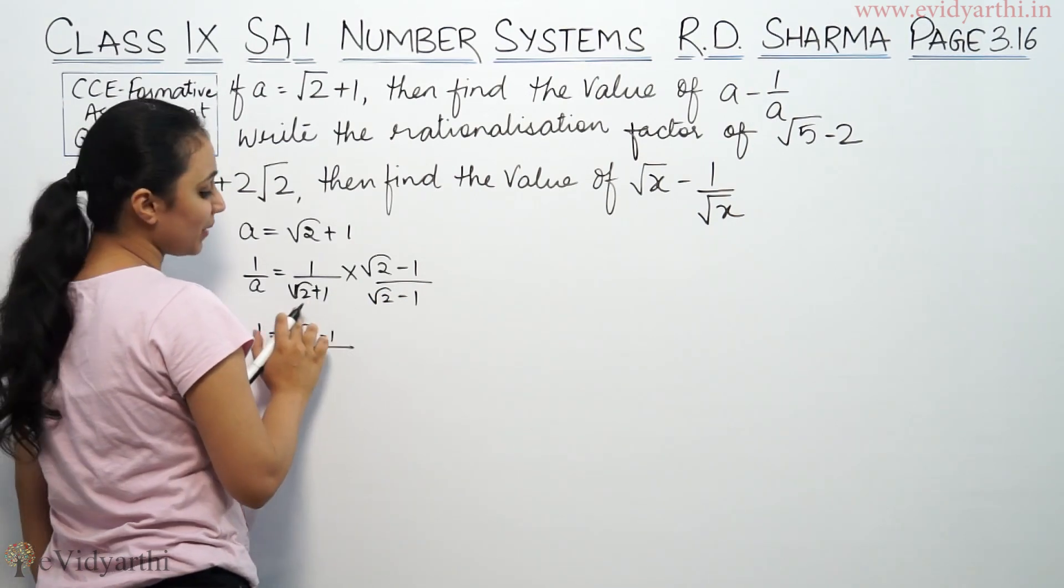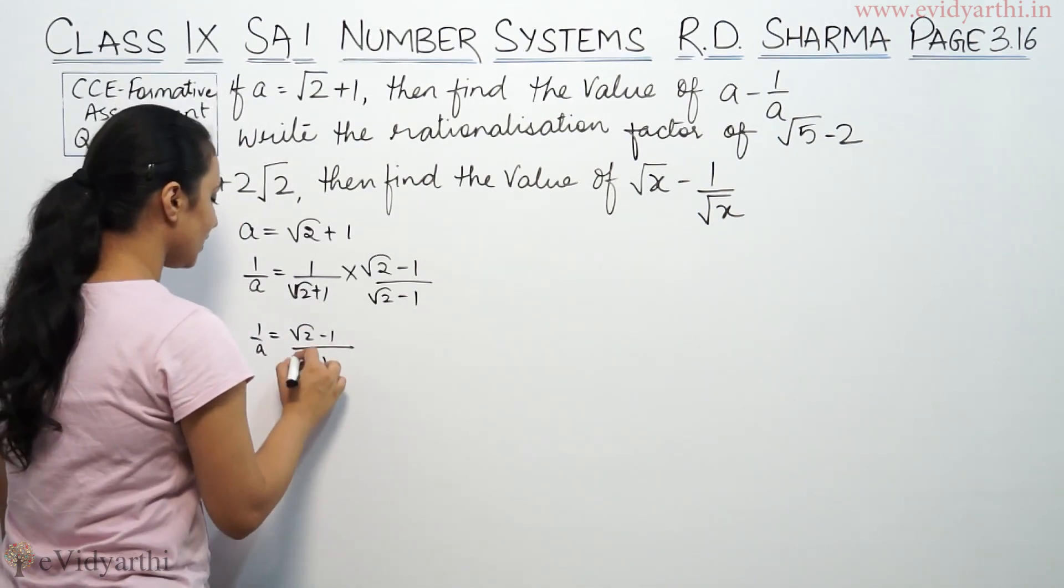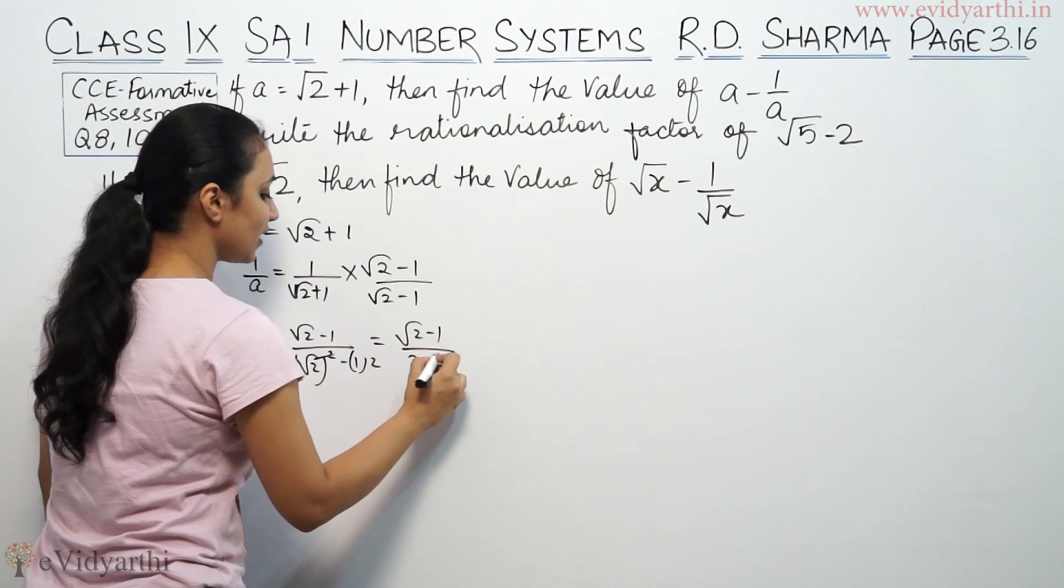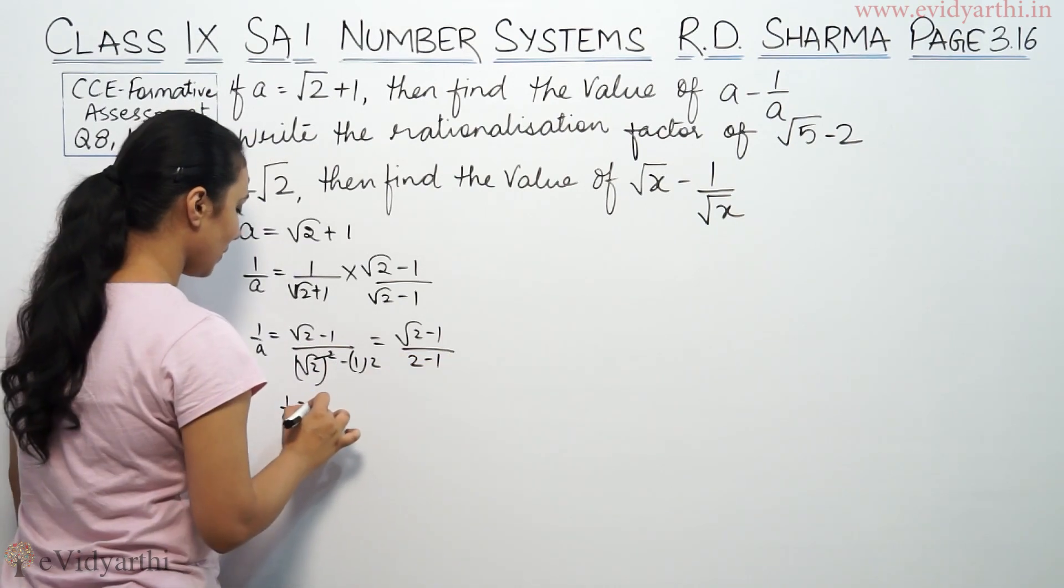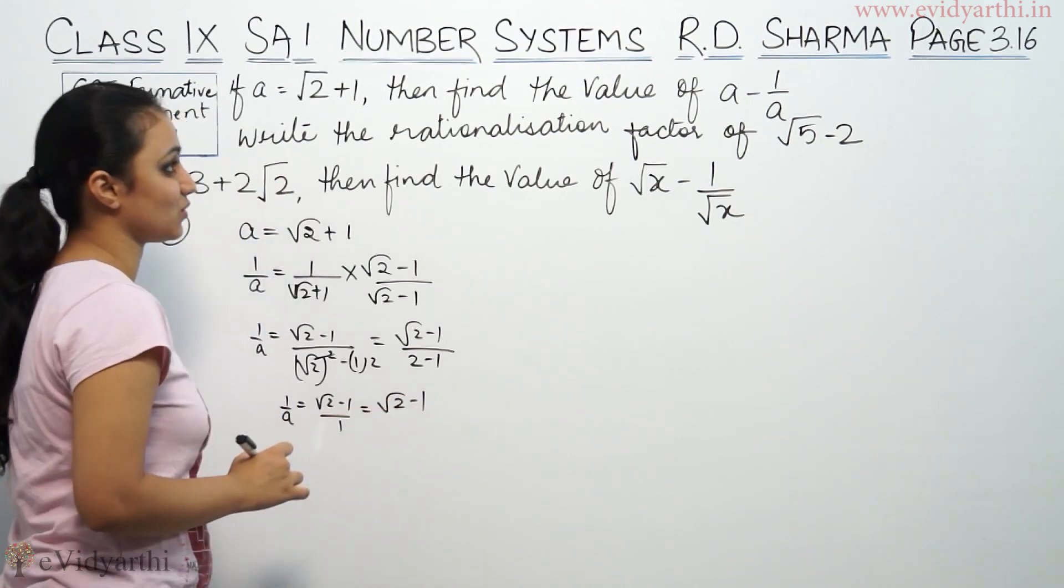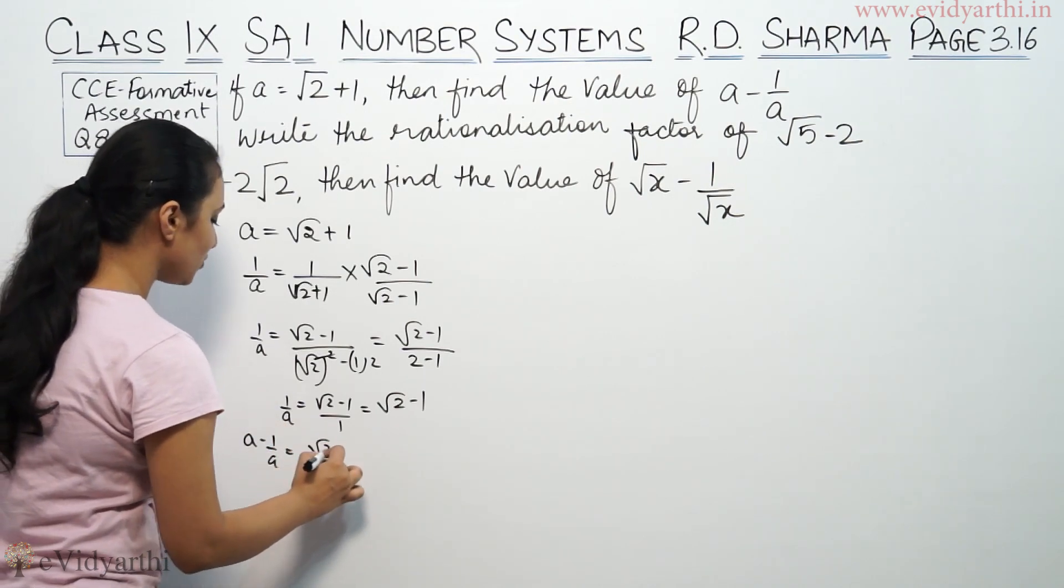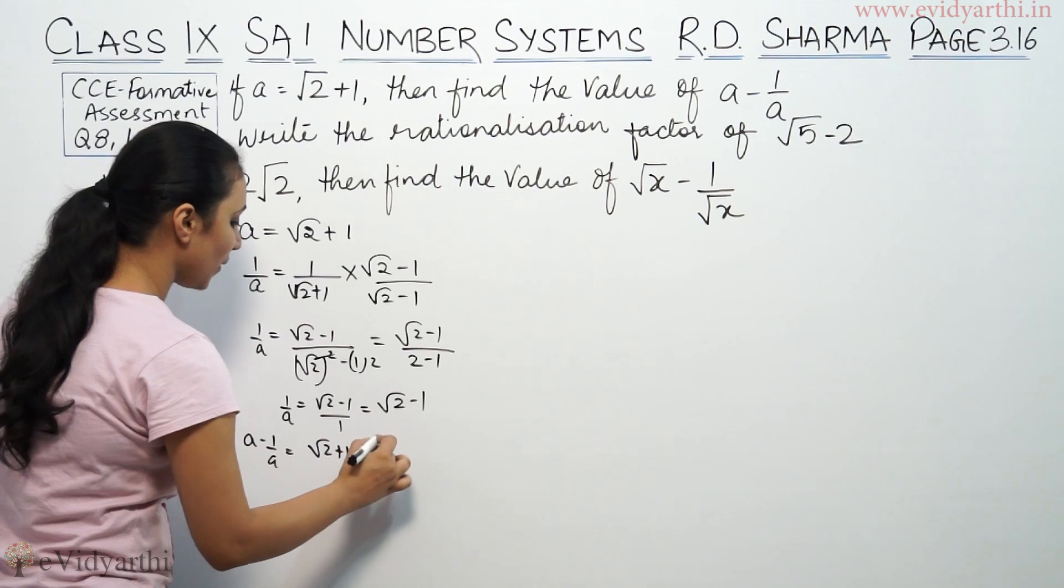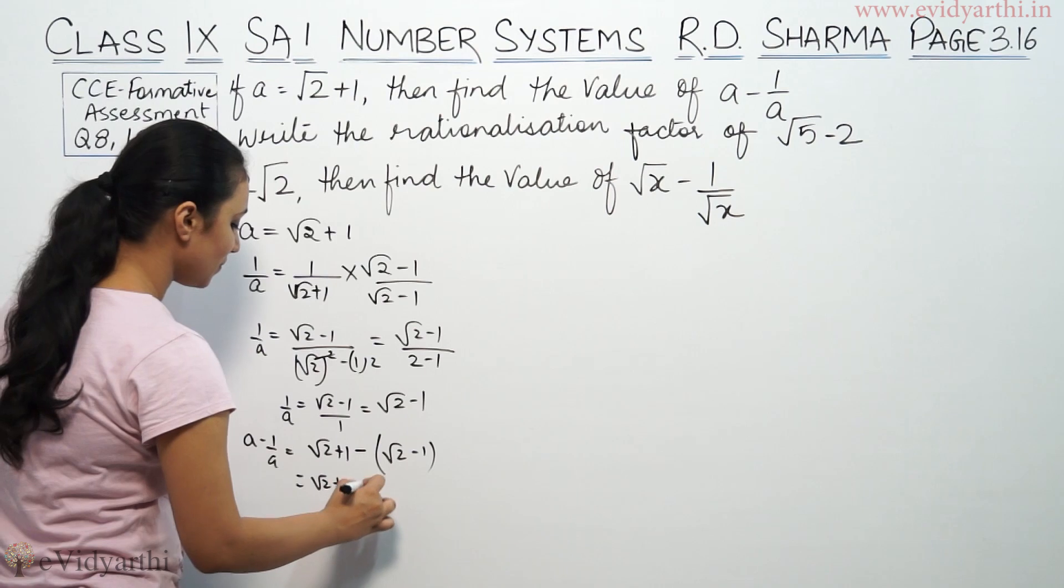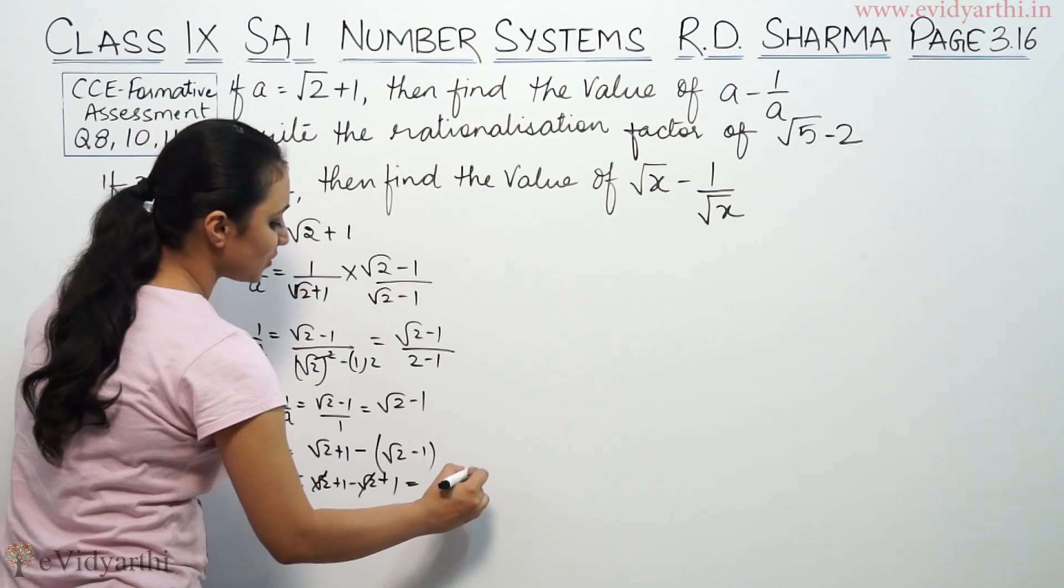So 1 by a will be equal to root 2 minus 1 using a plus b, a minus b formula where a square minus b square. So 1 by a is root 2 minus 1. Now we find a minus 1 by a, which will be root 2 plus 1 minus root 2 minus 1. Root 2 cancels, this is equal to 2.